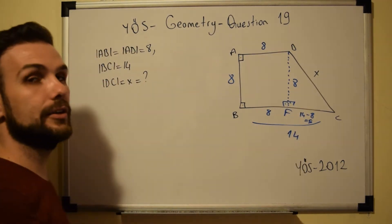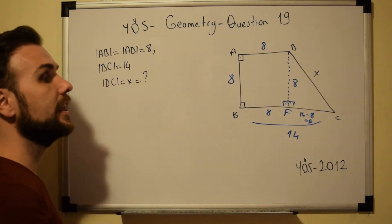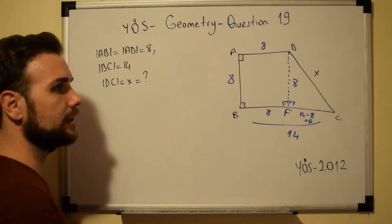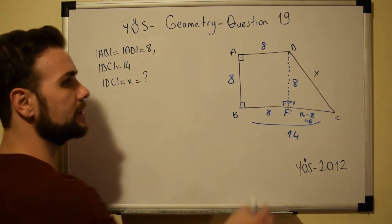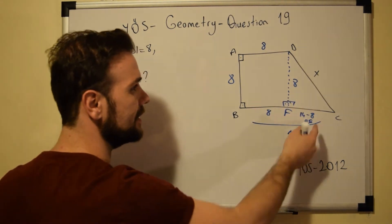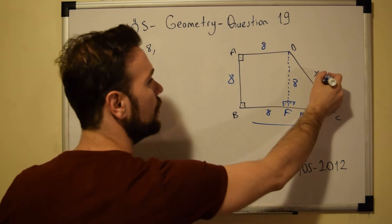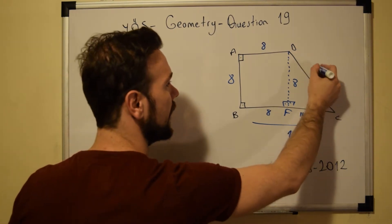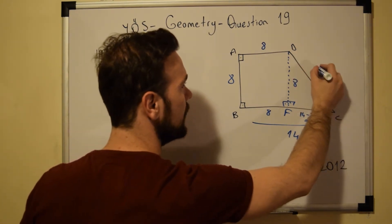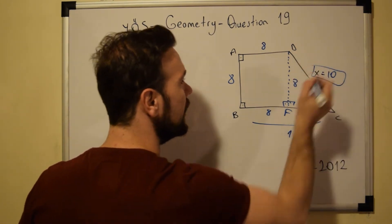We created a right triangle, and as you can see it is a common right triangle. Because if one of the sides is 8 and the other side is 6, we know that X, or the hypotenuse, will be equal to 10.